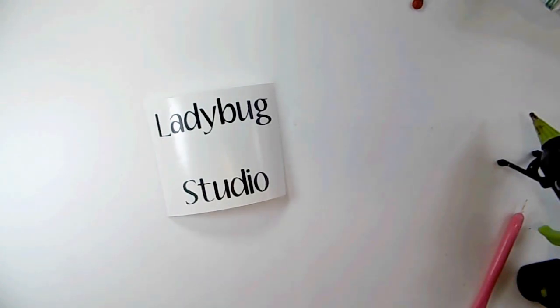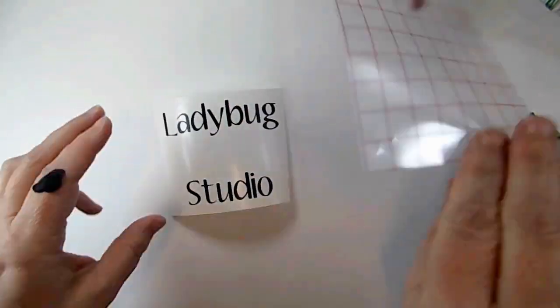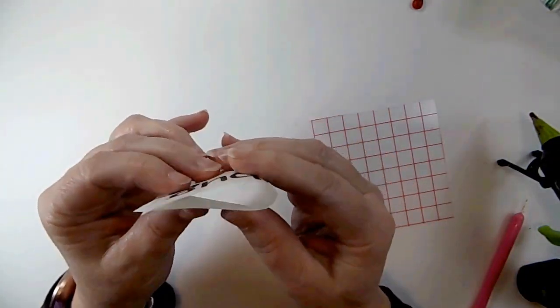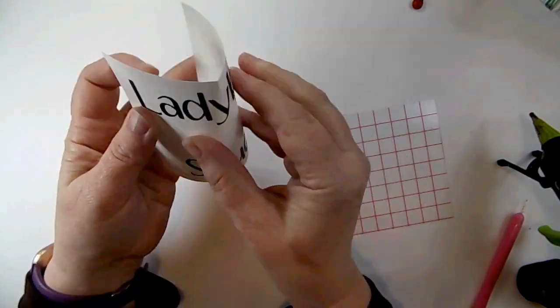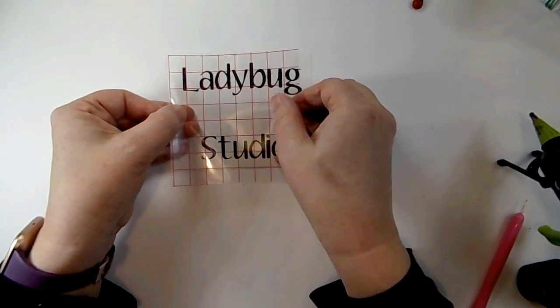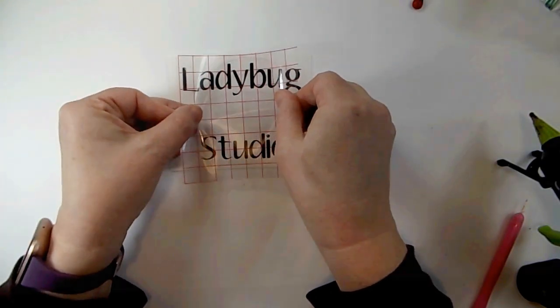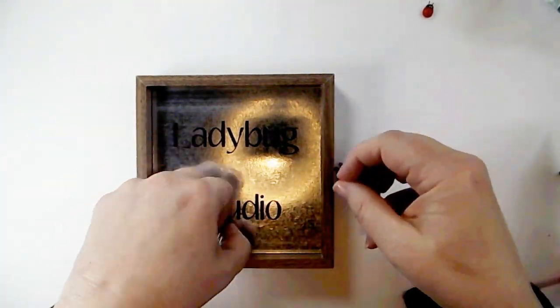You could definitely use stickers from Hobby Lobby, Walmart, any craft store. I do like Hobby Lobby has such a huge array of letter stickers. So if you don't have a Cricut, it doesn't leave you out to personalize your items. So then I just put my transfer tape on there and I just transferred it to this sign.